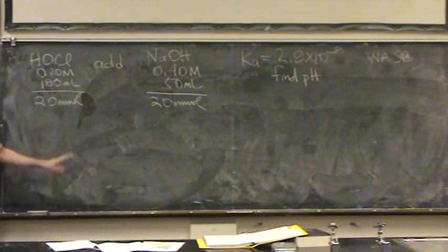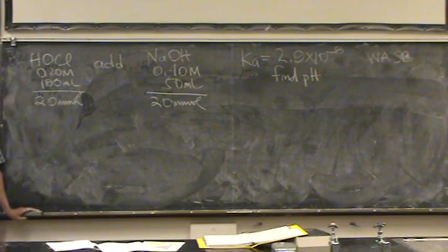So, out of millimoles of acid and base are equal, what part of the titration group? I meant the equivalence point. Thus, I must use what solving method? Ice table. The ice table, I must.